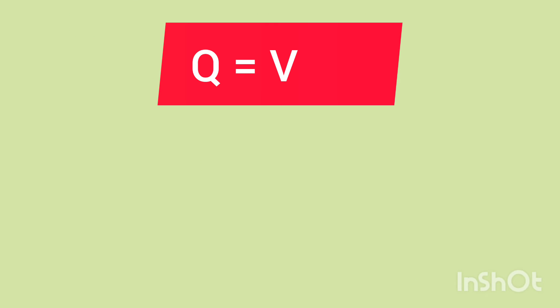So the basic formula for line sizing calculation is: flow rate equals velocity times cross-sectional area of pipe. That is Q = V × A, where Q is in meter cube per second, V is velocity in meter per second, and A is cross-sectional area in meter square.